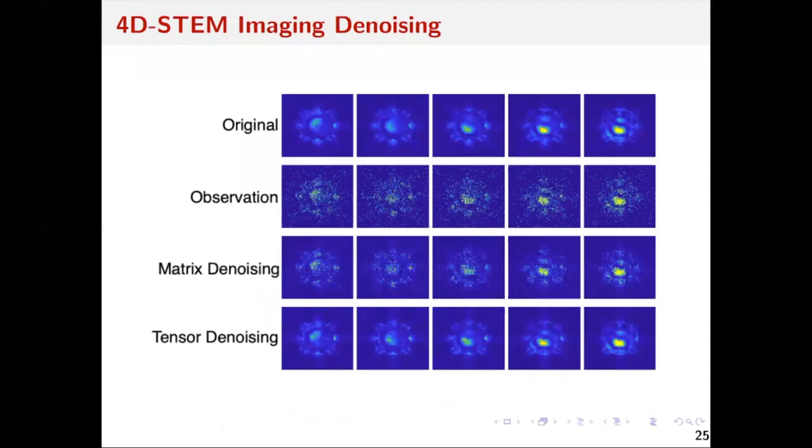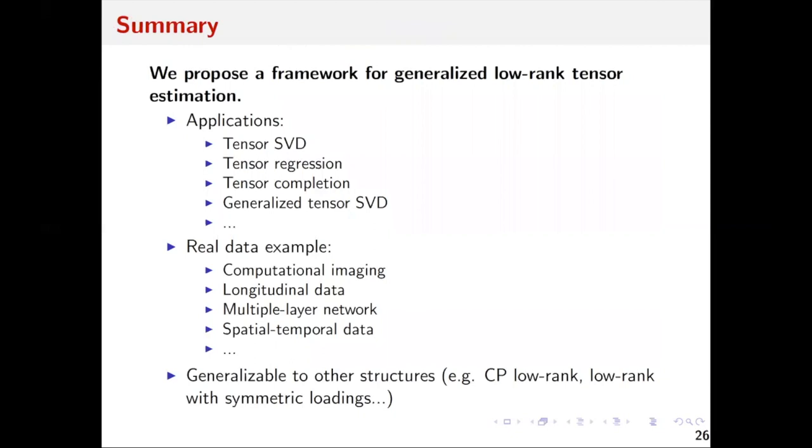This image illustrates the results. The first row corresponds to the true image of the atomic structure. The second row is the photon-limited images we observe. We can apply matrix denoising methods one by one on these matrix images and obtain this result. We can also stack all images together into one overall tensor and apply the proposed procedure using the Poisson negative log-likelihood. We can clearly see it gains much better results.